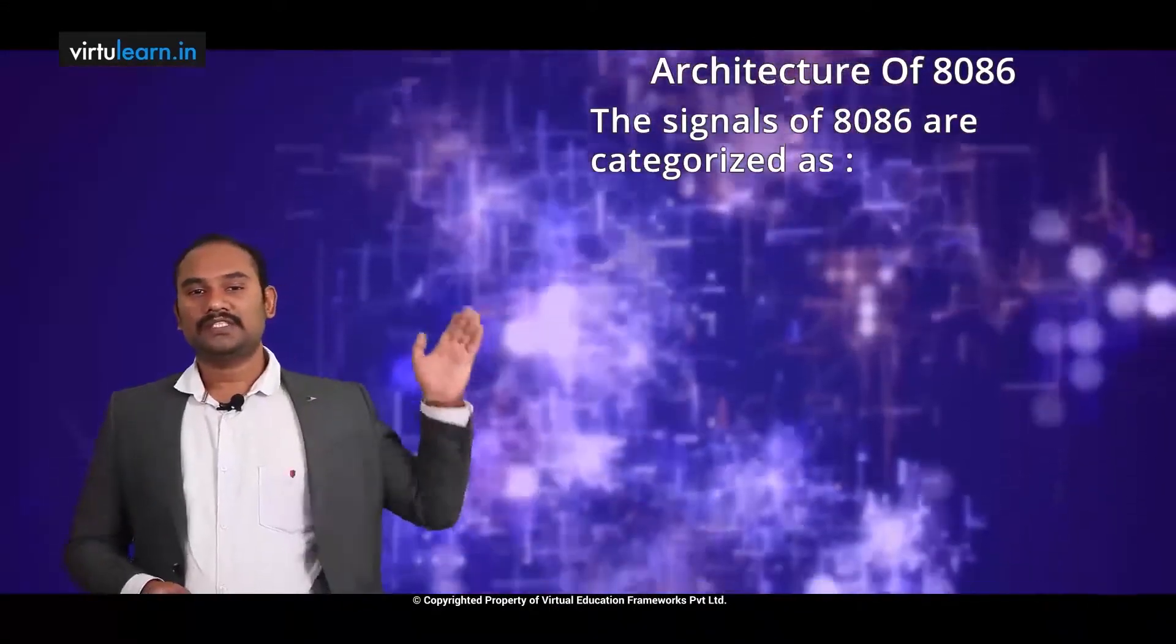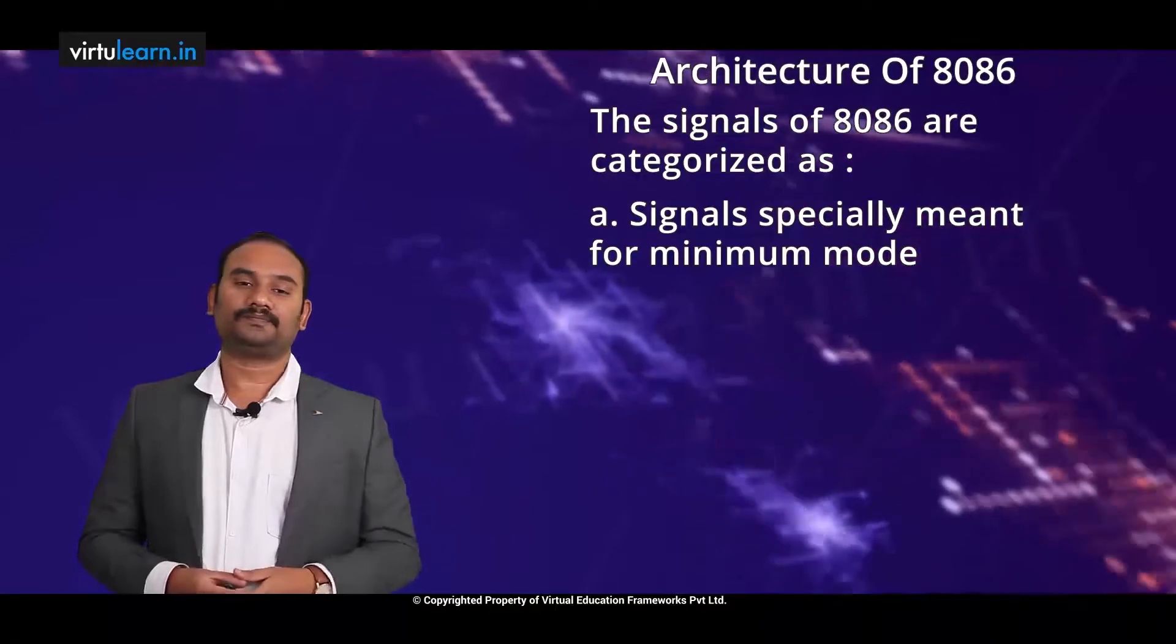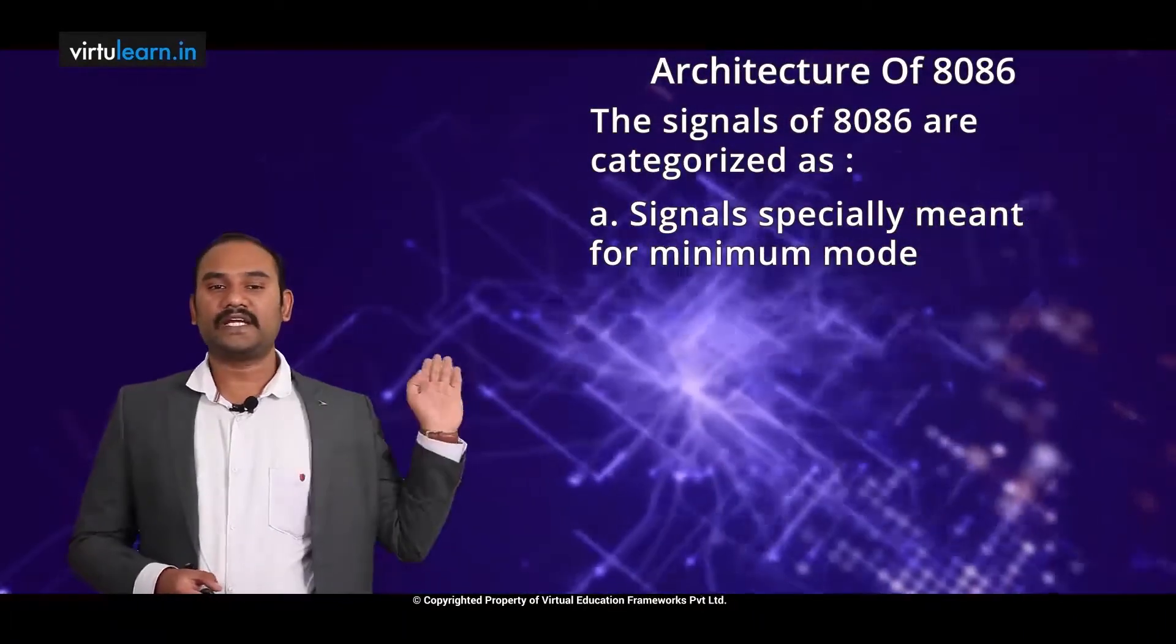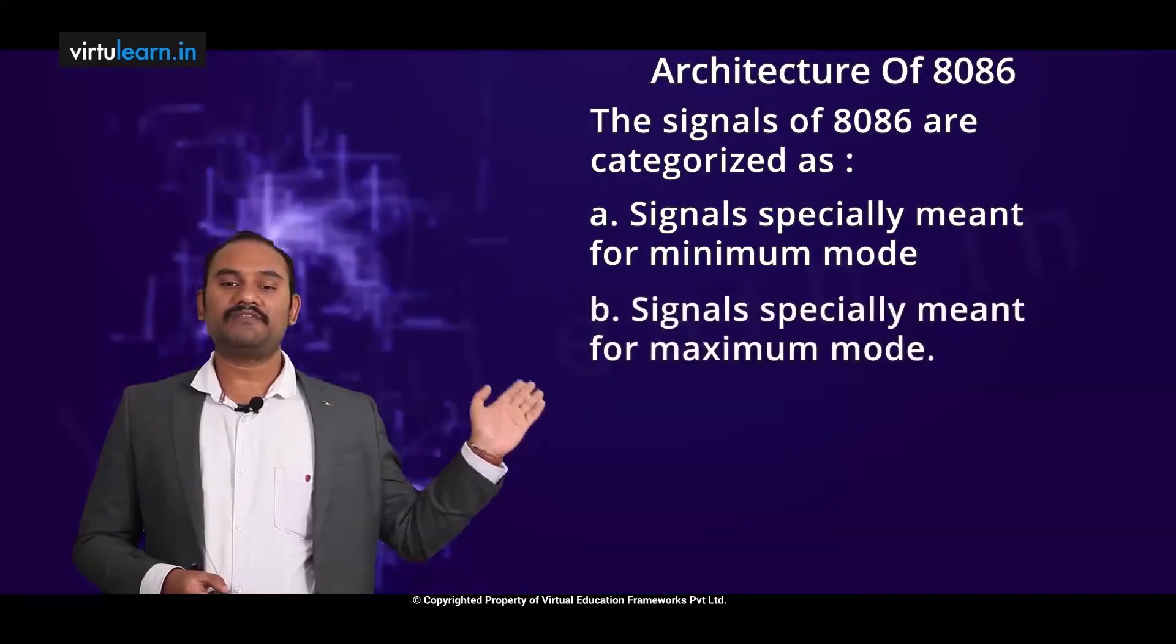First category, signals specially meant for minimum mode. Second category, signals specially meant for maximum mode.